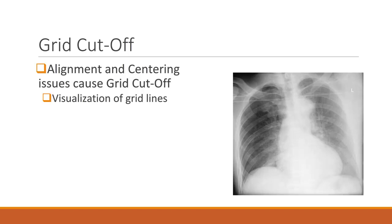Many times grid cutoff appears as a bright area or margin on the radiograph and grid lines can be distinguished. When grid cutoff is caused by off-centering, or the CR and grid not being perpendicular to one another, the grid cutoff is seen mostly on one aspect of the image. When the improper SID is used and causes grid cutoff, the brightness is symmetrical.